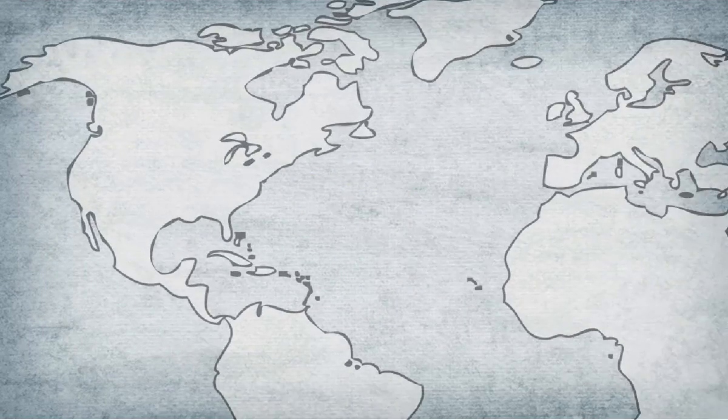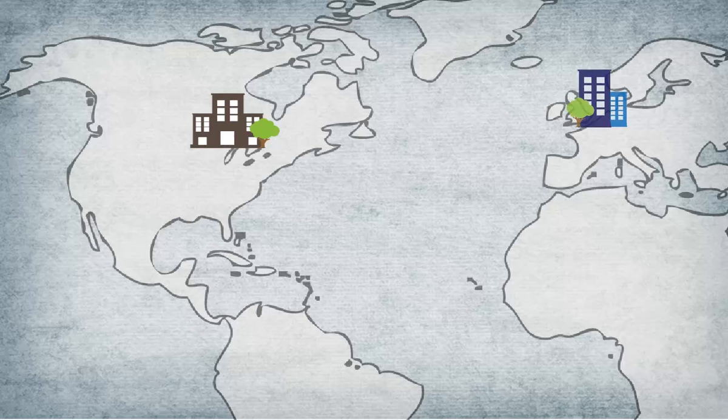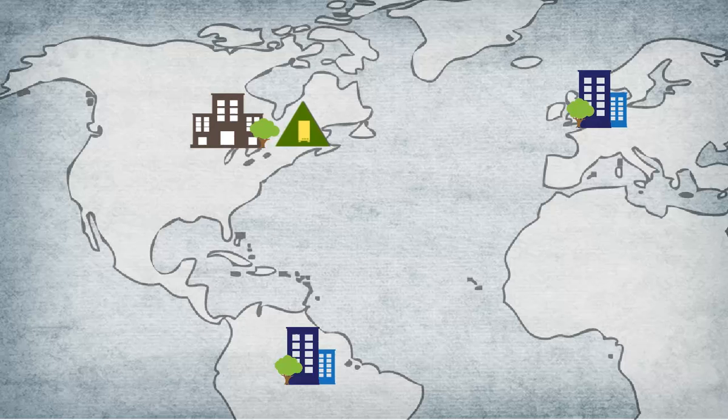Consider this scenario. Acme Corporation has its headquarters located in New York and branch offices in Berlin and Brazil. Acme has a domain controller located at their New York site. With this setup, login requests from Berlin go over the WAN to New York, thus resulting in slow logins.